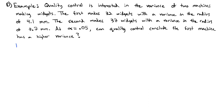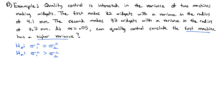We'll start by setting up our null and alternative hypothesis. The null hypothesis always has equality, so we're assuming the variance of the first machine is equal to the variance of the second machine. The alternative hypothesis is that the variance of the first machine is greater than the variance of the second machine, because we want to test if the first machine is higher.